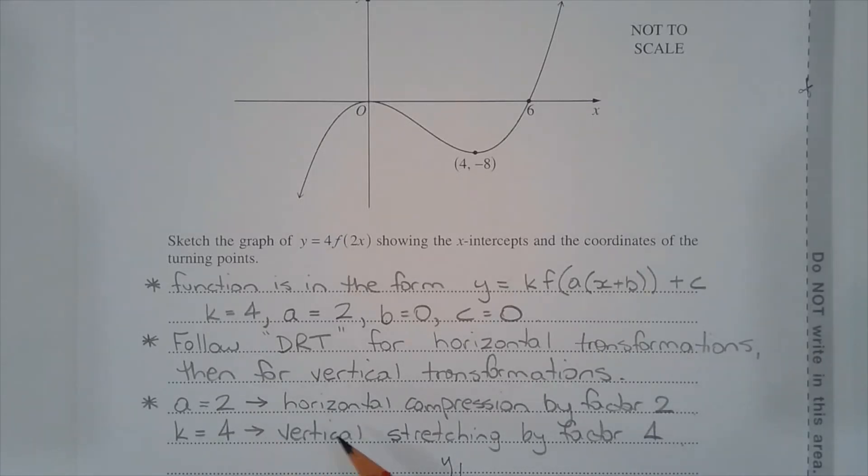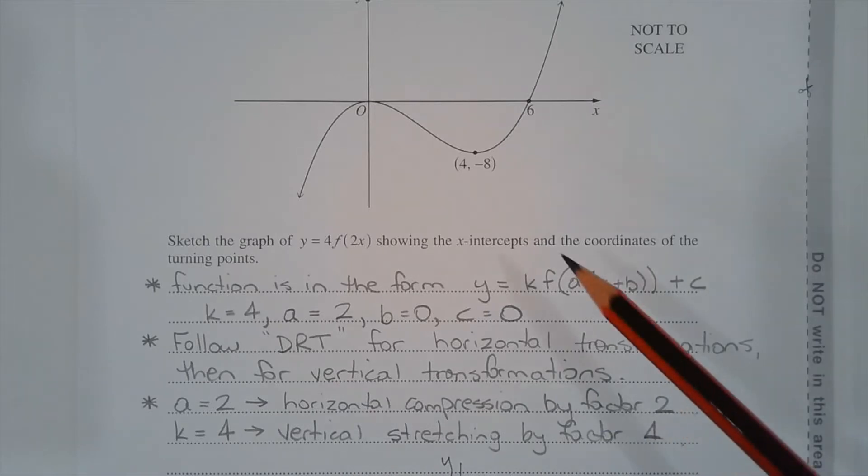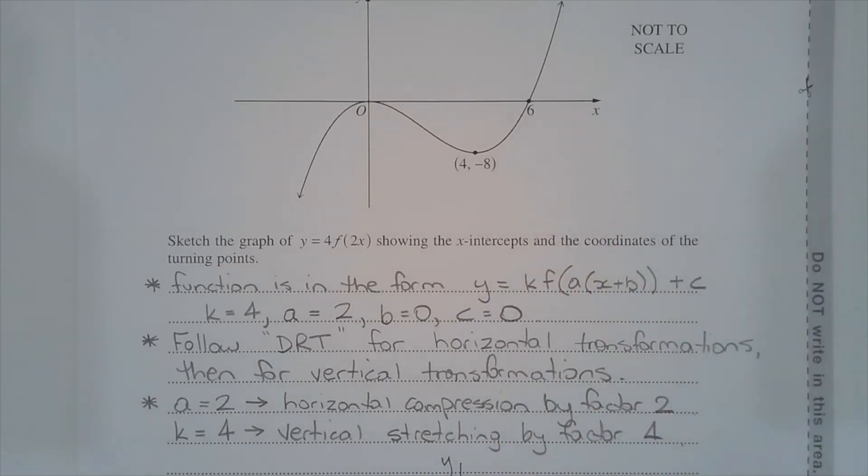So when a equals 2 and there's a horizontal compression by factor 2, that means the x-coordinates are divided by 2. k equals 4 means that the y-coordinate, or any of the y-coordinates on the curve, are multiplied by 4.